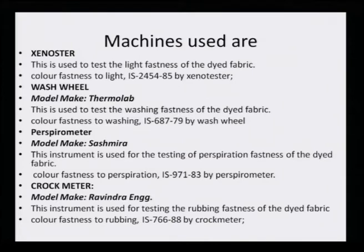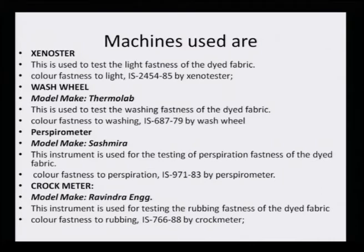Similarly, we have ASTM standards, which are American test methods, and DIN standards from Germany. The perspirometer, a popular model developed by Sasmira, is used for testing perspiration fastness of the dyed fabric. The color fastness to perspiration is evaluated by IS 973-83, and IS 973 was introduced in the year 1983.